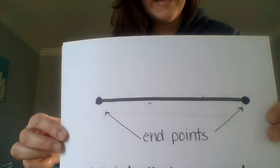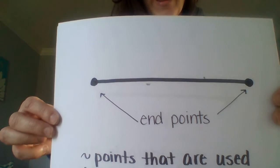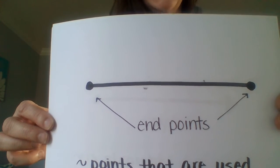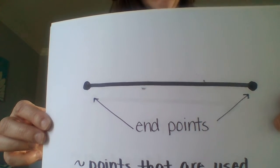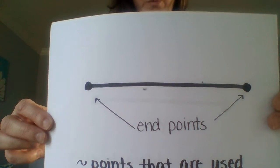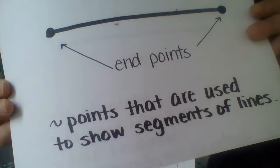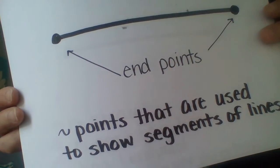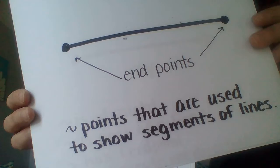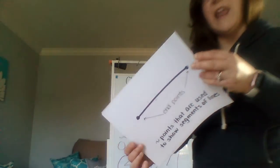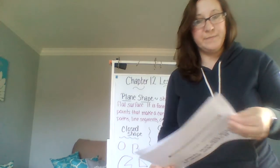The next word is end points. You can see the arrows where it is pointing to the end point. An end point has points that are used to show segments of lines.